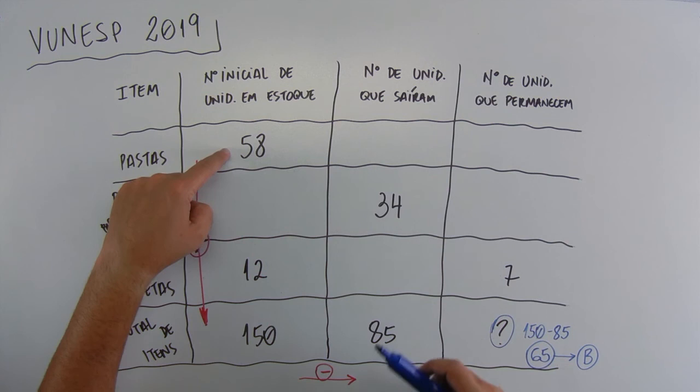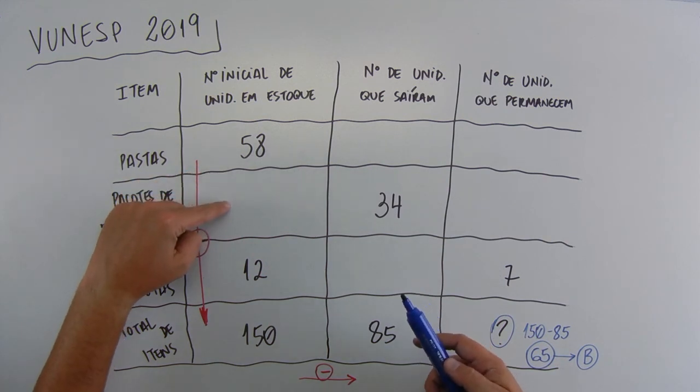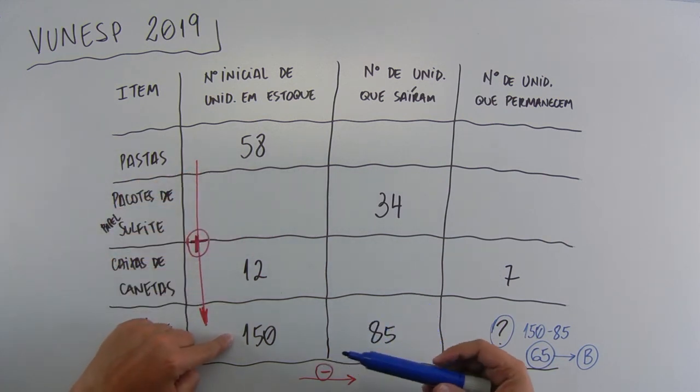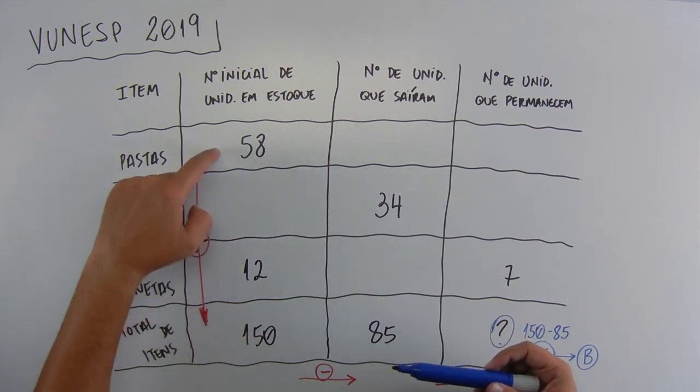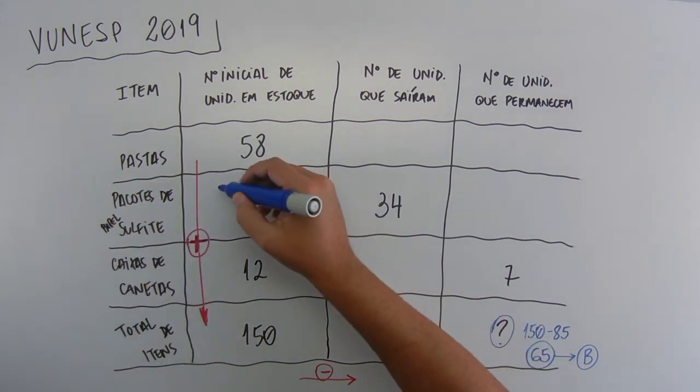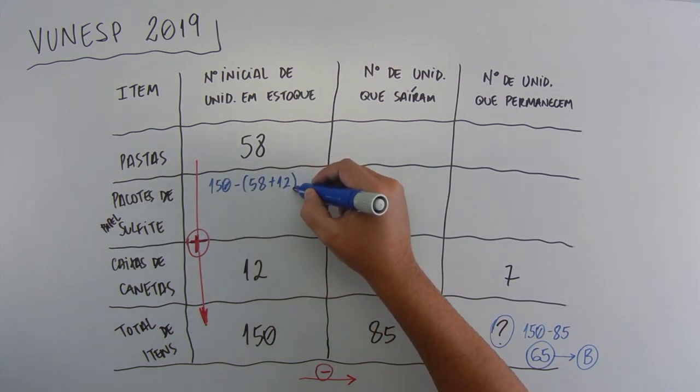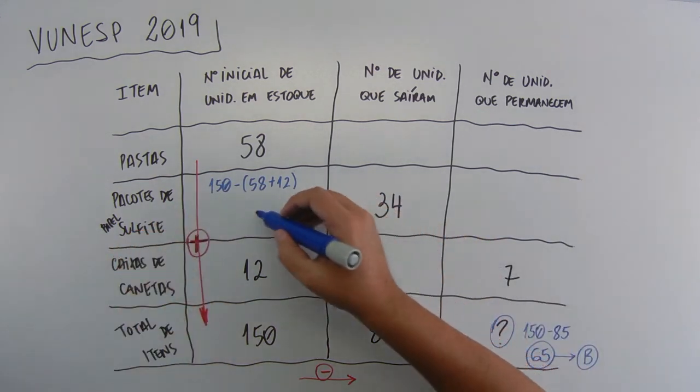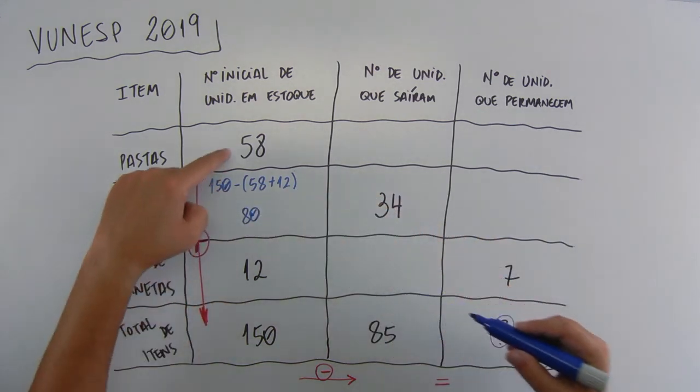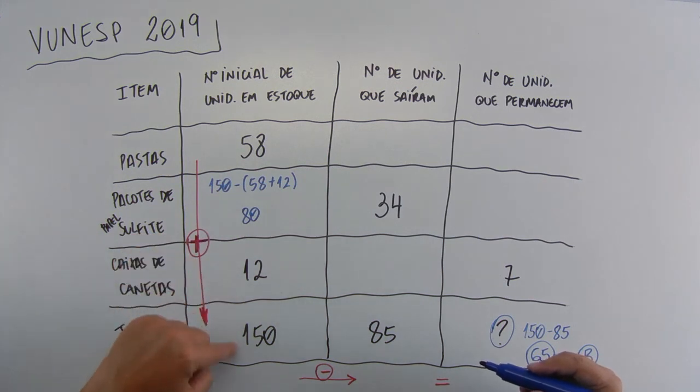So, let's see here, 58 plus this, plus this has to give 150. So, we just do 150 minus 58 plus 12. I'll put the calculation indicated here: 150 minus 58 plus 12. And this will give a number here that is 80. So, 58 plus 80 plus 12 will give 150.